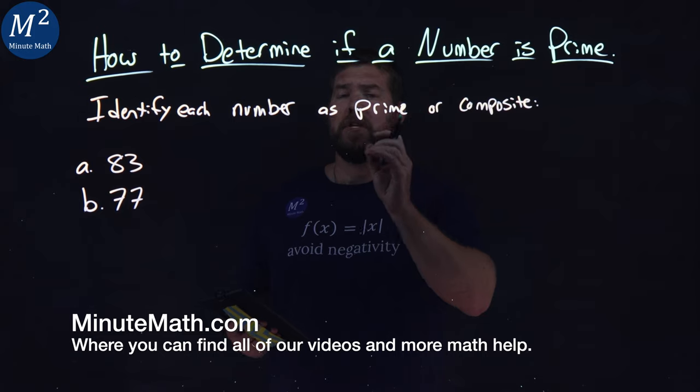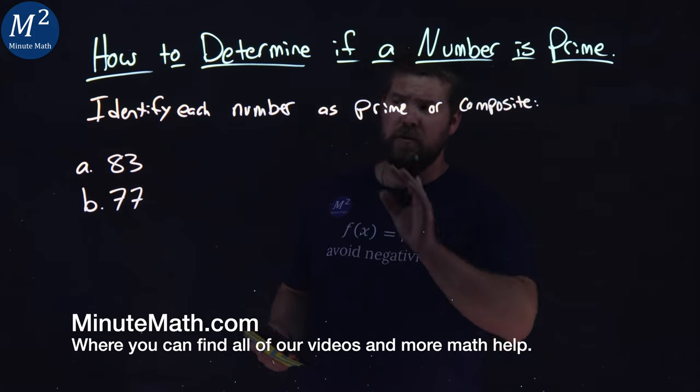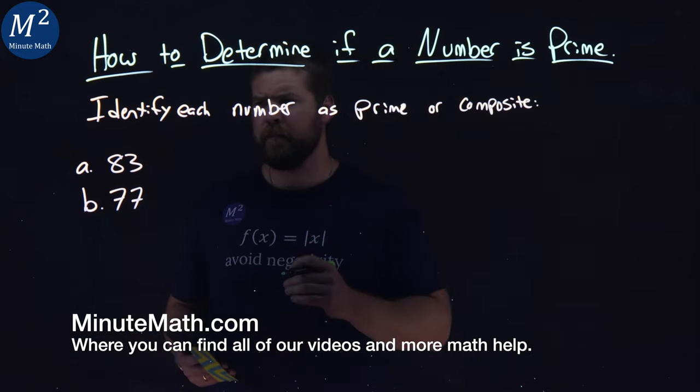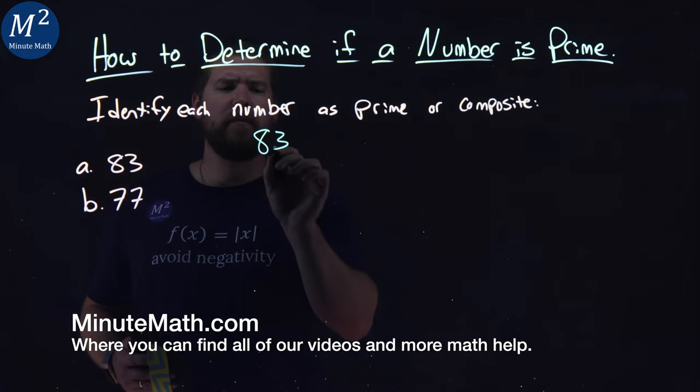We need to identify each number as prime or composite. Our two numbers are 83 and 77. Let's start with 83.